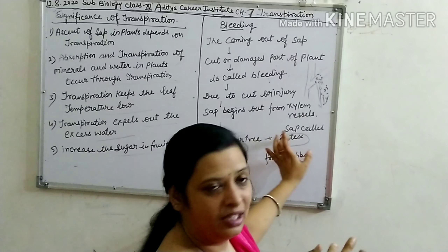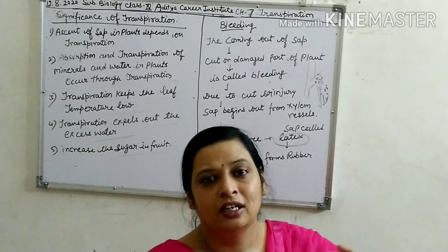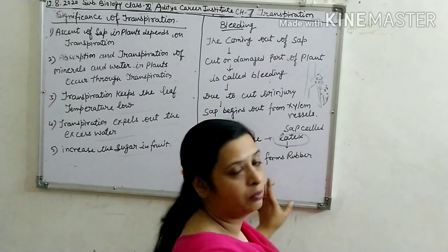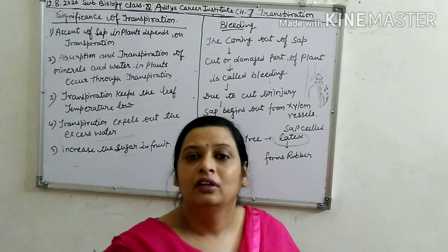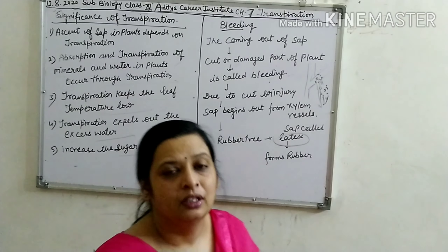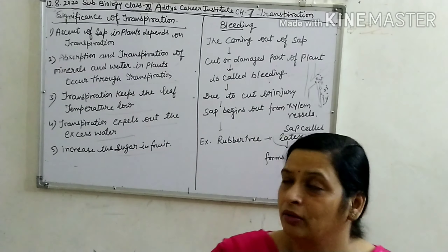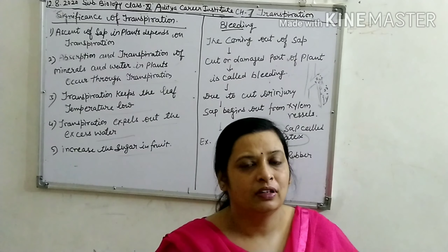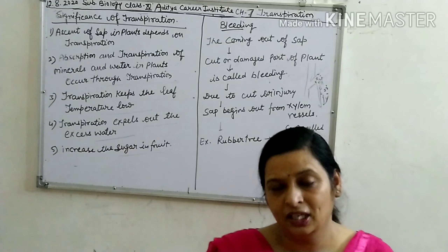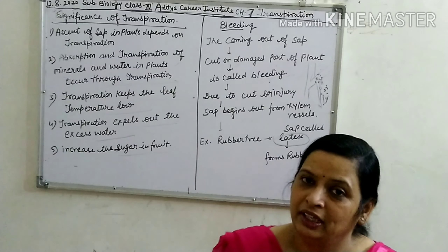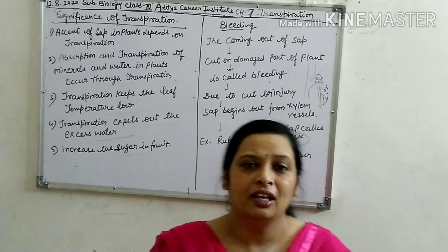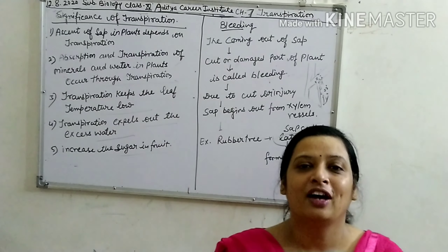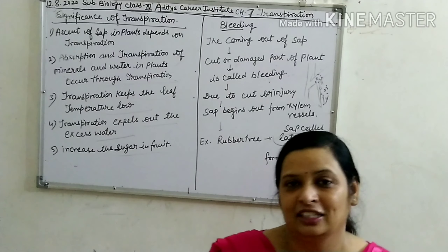This sap is called latex, and from this latex rubber is formed. So today we discussed the significance of transpiration and bleeding, which is the last topic of this chapter. Thank you. Have a nice day.